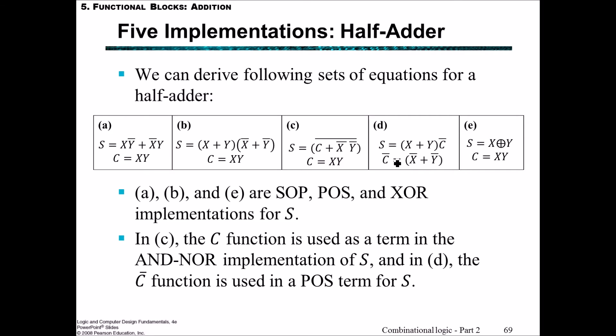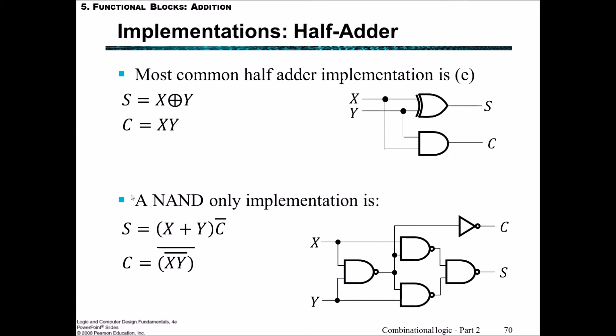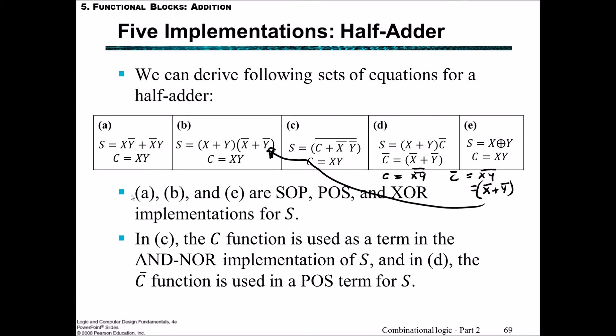For (d), it's an interesting case where originally we had C = (XY)', so C' = (XY)' = X' + Y' by De Morgan's theorem. Because we have C' = X' + Y', and from (b) we had X' + Y', we could replace that with NOT C. The most common half-adder implementation is (e), which uses XOR gates.